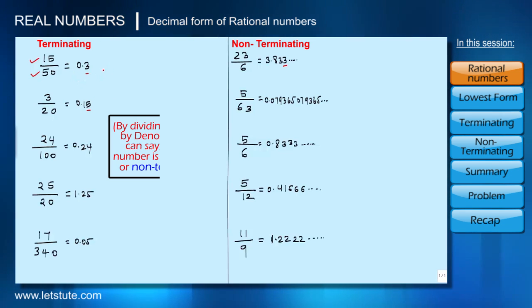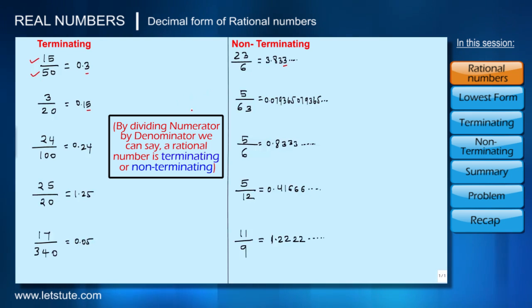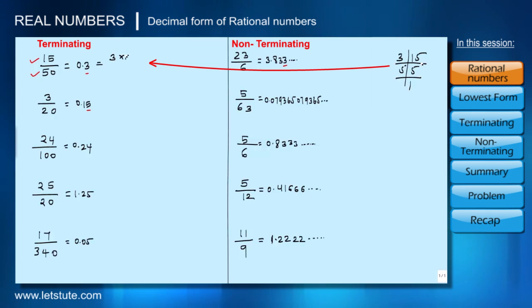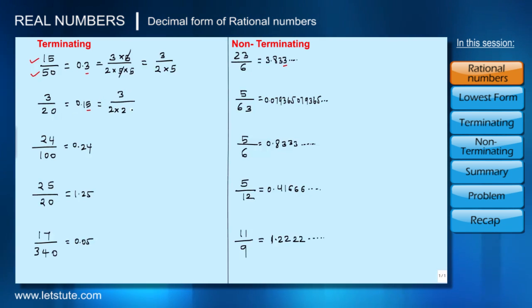Dividing numerator by denominator in each case to figure out which terminates and which doesn't is a very time-consuming process. So there has to be a more logical approach — one where without actually dividing, we can say whether a number is terminating or non-terminating. Let's factorize the numerator and denominator in each case. For example, 15 = 3 × 5 and 50 = 2 × 5 × 5, so 15/50 simplifies to 3/(2 × 5). Similarly, 3/20 = 3/(2² × 5).